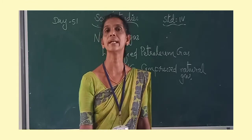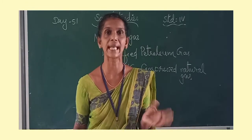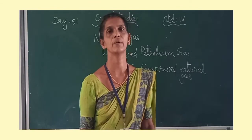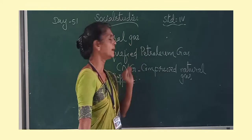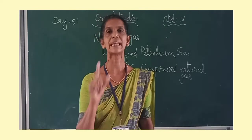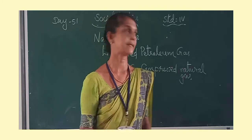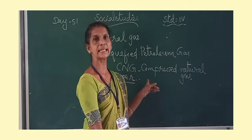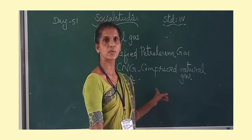Children, what did we study today? Today we were studying about natural gas. Natural gas is what we get when crude oil or petroleum is taken out from the earth. Natural gas is used in industries for producing electricity and for cooking. The gas we use in our homes is Liquefied Petroleum Gas, which is also a natural gas. In places like Delhi, in order to reduce the rate of pollution, they use CNG — Compressed Natural Gas.